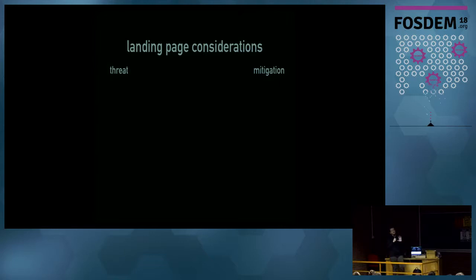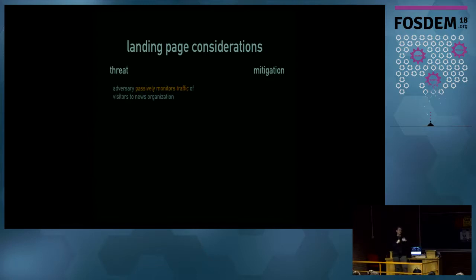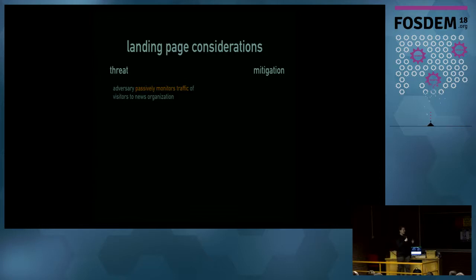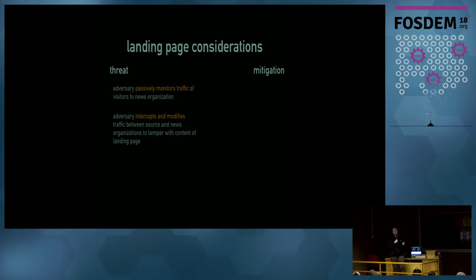There are a lot of concerns about the landing page itself. An adversary can passively monitor traffic of visitors to the news organization — if there's no HTTPS, a passive observer can see a source's real IP connecting to the news org's leaks page. An adversary could also intercept and modify traffic to tamper with the landing page content — for example, replacing the Onion URL with one they control.